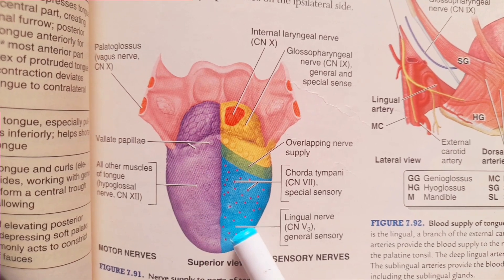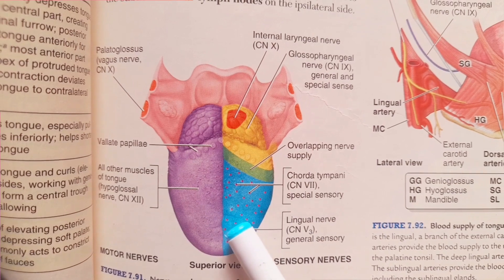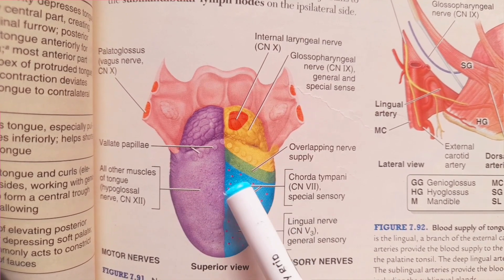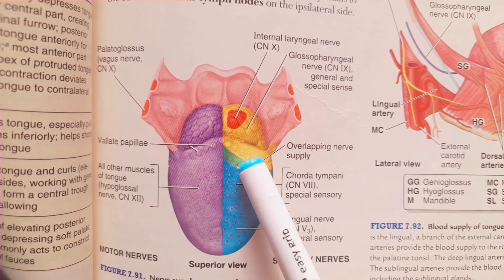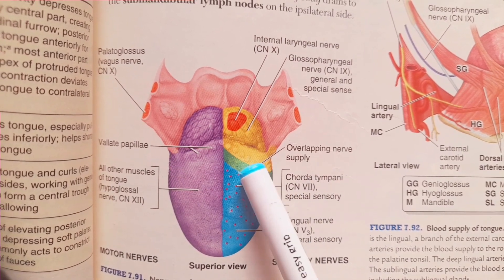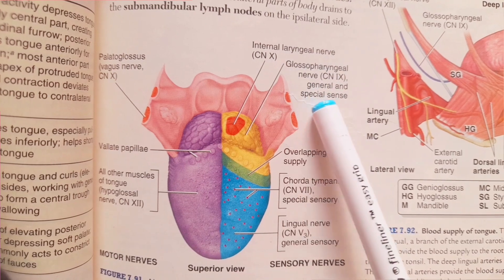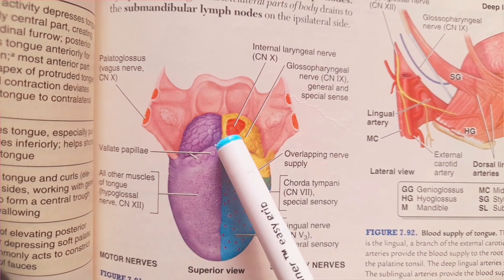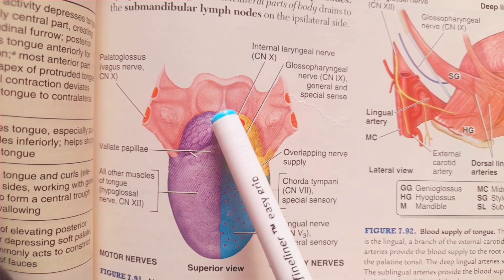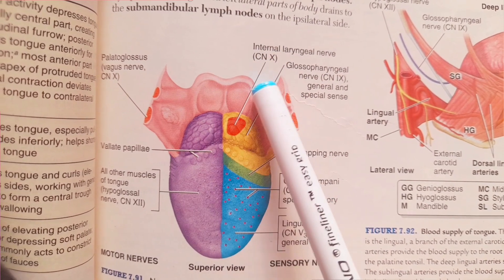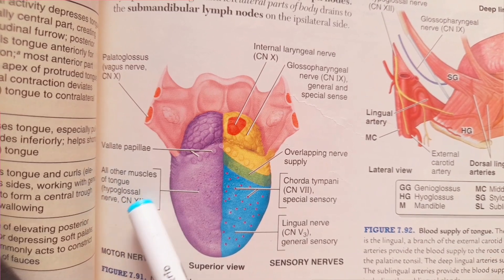The lingual branch of the trigeminal nerve carries general sensations from the anterior two-thirds of the tongue, whereas the chorda tympani branch of the facial nerve carries special sensations, including taste, from the anterior two-thirds. The general and special sensations from the posterior one-third of the tongue are carried by the glossopharyngeal nerve. The most posterior part of the tongue is supplied by the internal laryngeal branch of the vagus nerve. All muscles of the tongue are supplied by the hypoglossal nerve, cranial nerve XII.